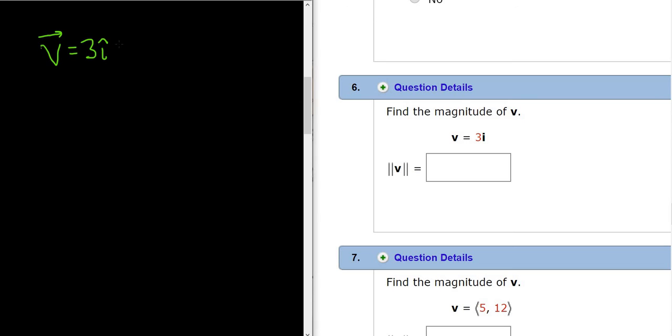You can think of this as 3i plus 0j, where i hat and j hat are your unit vectors. You can write this in component form as 3 comma 0. This is perhaps a better way to think of it.